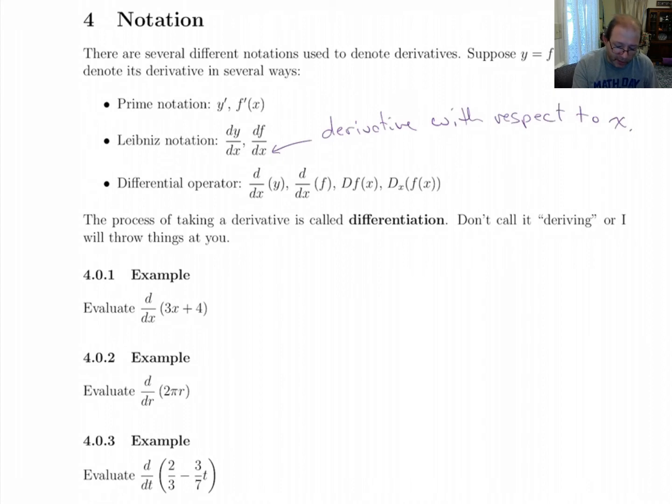So, Leibniz notation is nice, because on things like this, you can sort of specify we're taking the derivative of this function, and the variable we're taking the derivative with respect to is r.